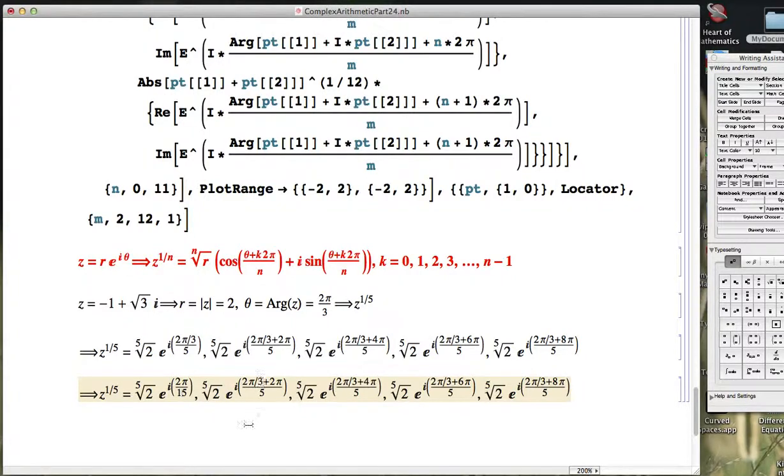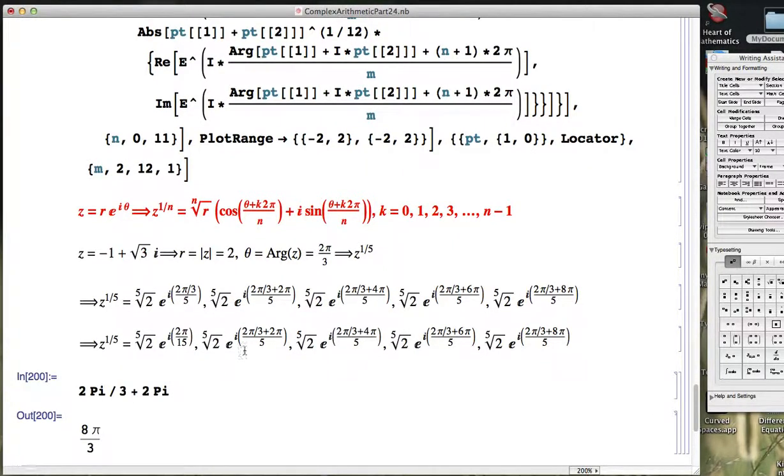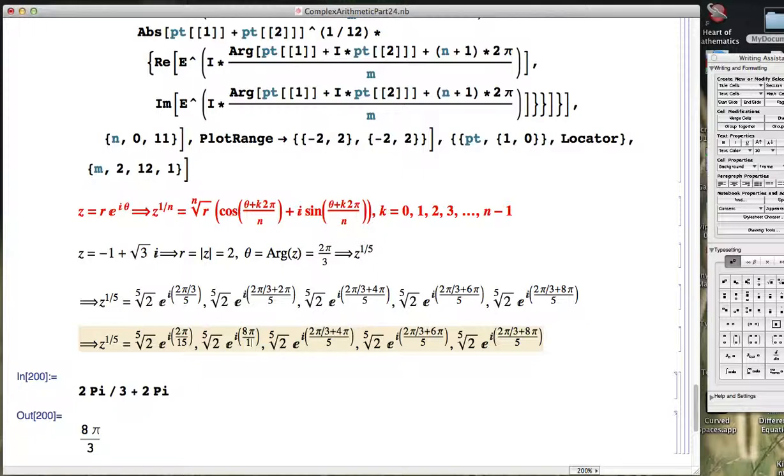2 pi over 3 plus 2 pi... let's see, maybe I should use Mathematica to help me do this. Using capital P-I for pi, that'll be 8 pi over 3, but then I divide by 5 as well. So I'm going to get 8 pi over 15. And in fact, think about it, these coefficients of the pi in the numerator are just going to keep going up by 6 each time. So the next one is going to be 14 pi over 15, and then 20 pi over 15, and then 26 pi over 15.